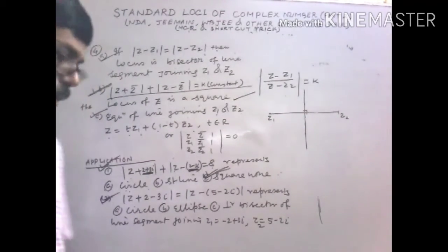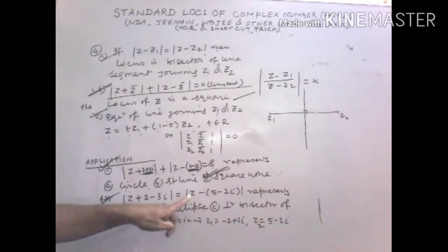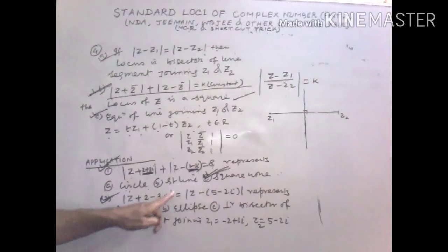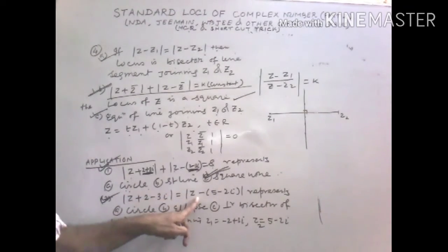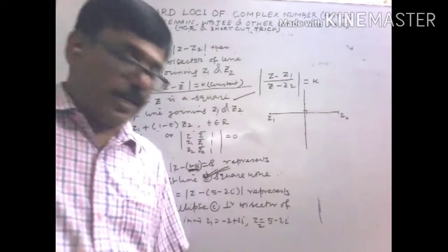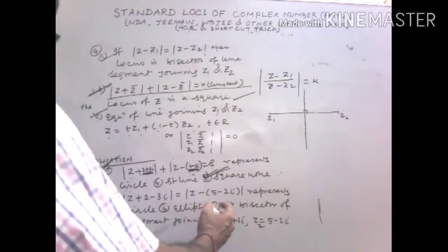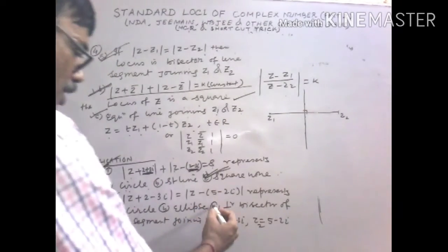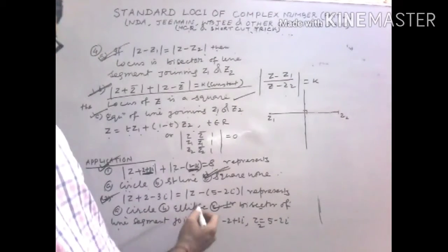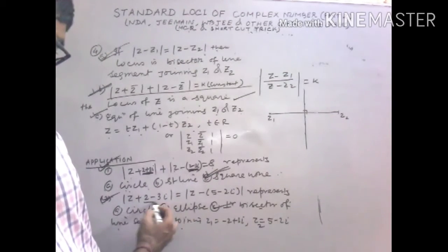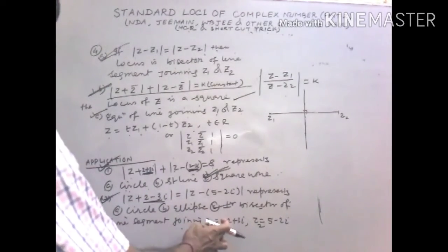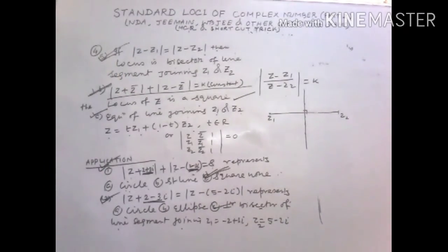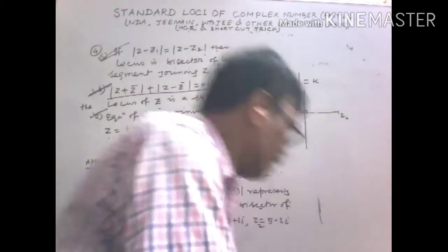Problem number 2: |(Z + 2 - 3i)| / |(Z - 5 - 2i)| with K = 1. Since K equals 1, it is not a circle. From result 4, it is the perpendicular bisector of the line segment joining -2 + 3i and 5 - 2i.